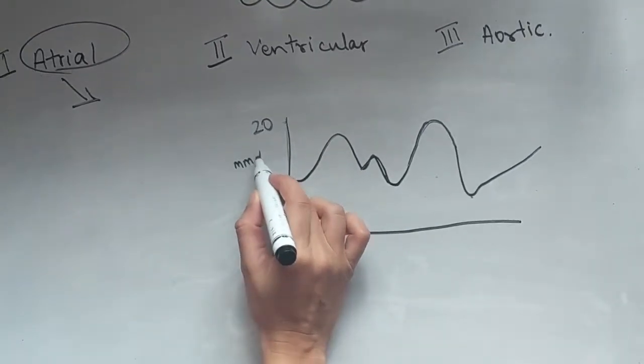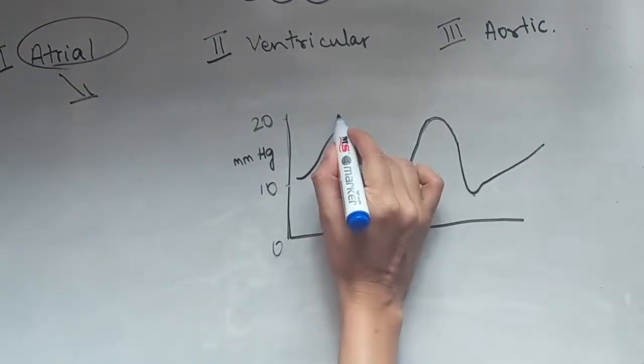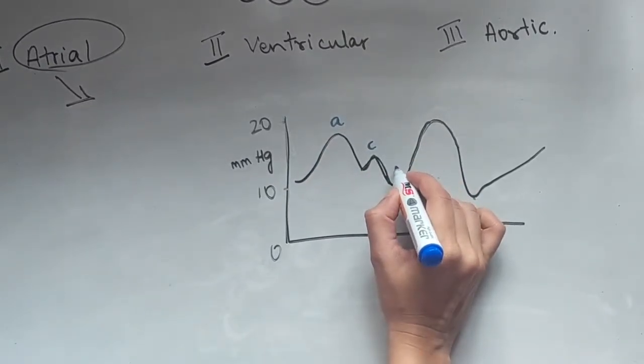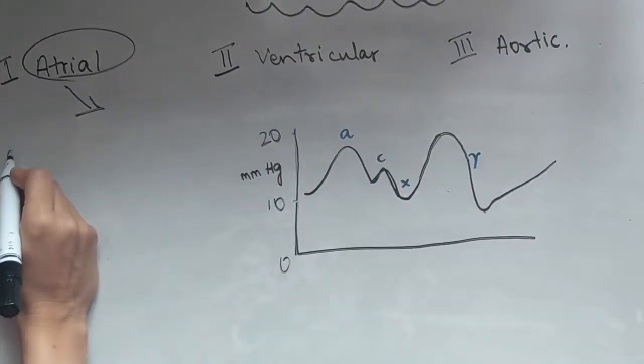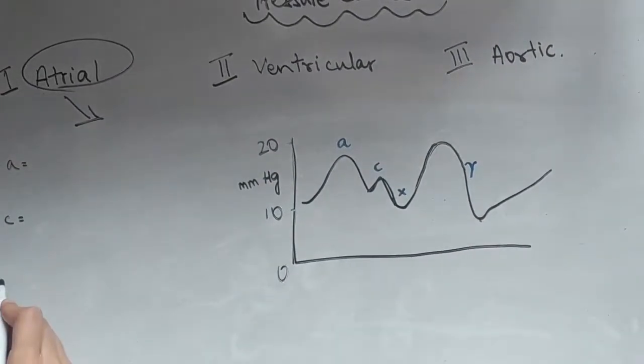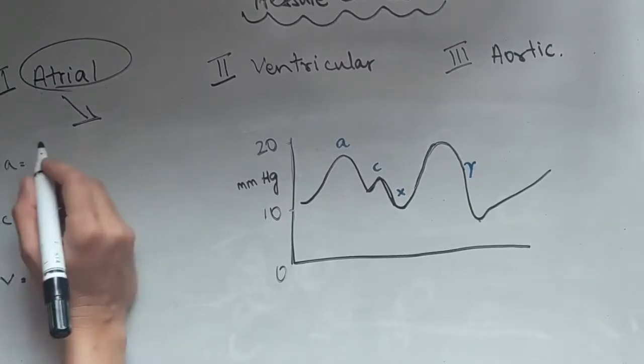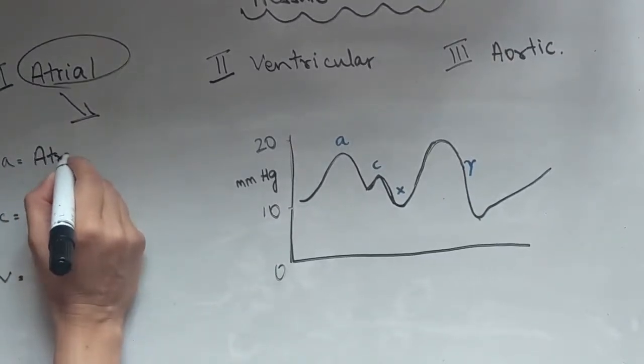So the maximum pressure would be twenty mmHg. A is for atrial contraction. So it is the pump that starts it off.